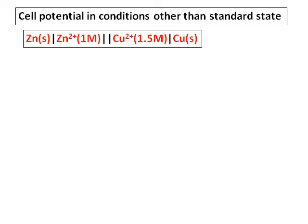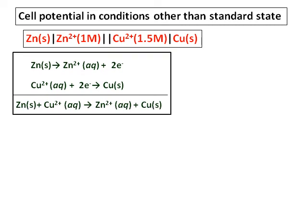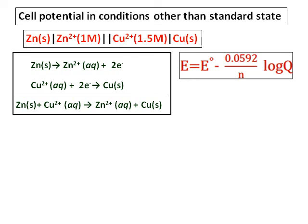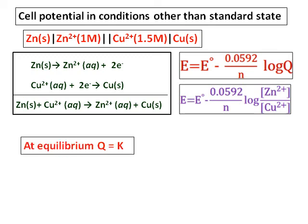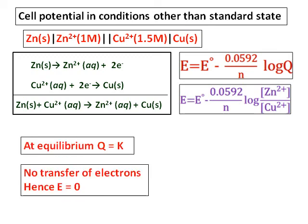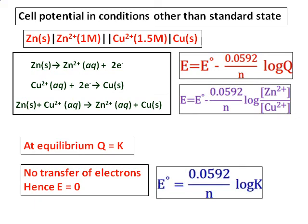Consider the zinc-copper cell and calculate E. In this reaction, zinc is oxidized and copper ions are reduced to copper. When substituting values into the Nernst equation for Q, the species at the anode (oxidized) goes in the numerator and the species at the cathode (reduced) goes in the denominator. So zinc ion concentration is in the numerator and copper ion concentration is in the denominator. At equilibrium where Q equals K, E equals 0 and E0 reduces to the familiar relation between E0 and log K.